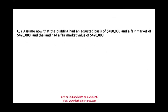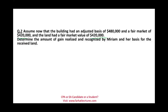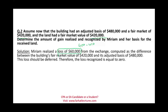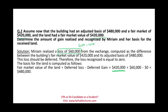Now assume the building has an adjusted basis of $480 and a fair value of $420 — so now we have a loss — and the land she received is also $420. Miriam has a realized loss of $60 ($480 minus $420). What do we do with this loss? We always defer the losses. The loss recognized is zero. Her basis will be the fair value of the asset received ($420) plus the deferred loss ($60), minus any deferred gain ($0) — so the basis is $480. By deferring the loss, we increase the basis of the new asset.